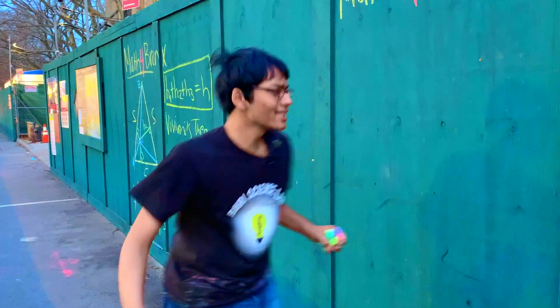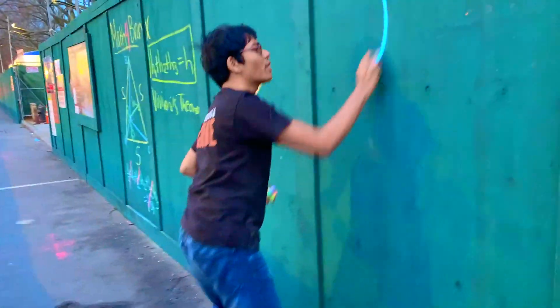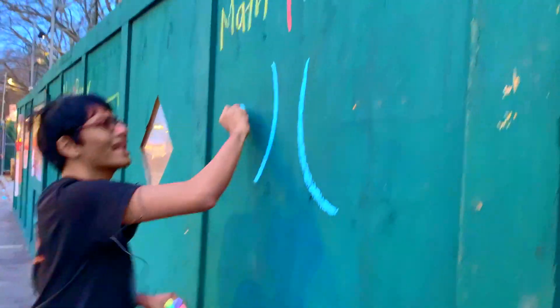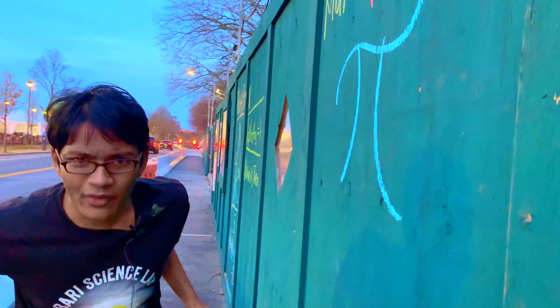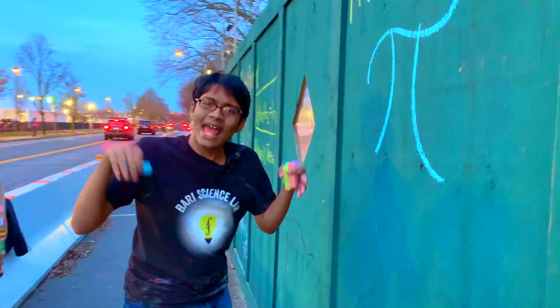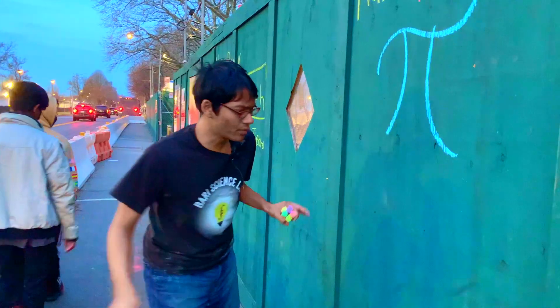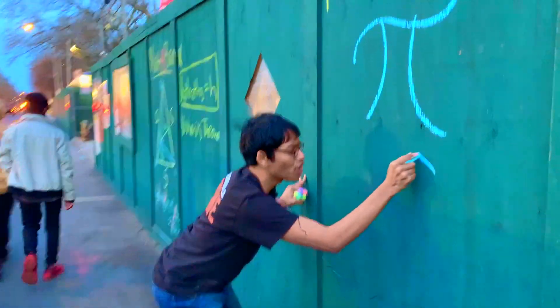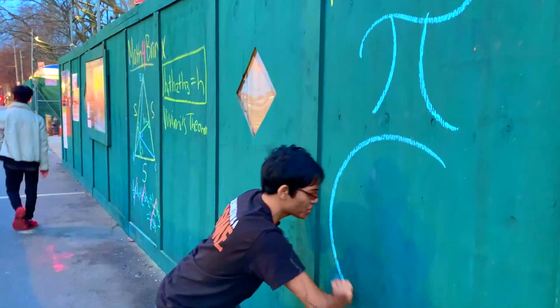All right folks, welcome back to the next lecture of Maths for Vons. Today, we're calculating pi. That's right, 3.14159. How do we calculate it?